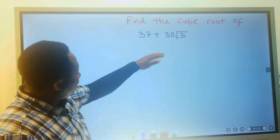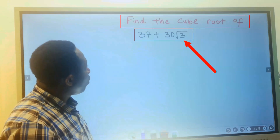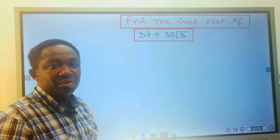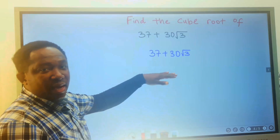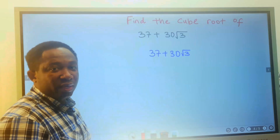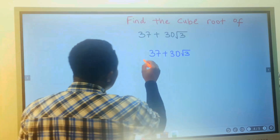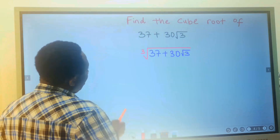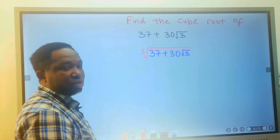Let's find the cube root of this quadratic surd. Step number one: write down the quadratic surd and take the cube root according to the question.